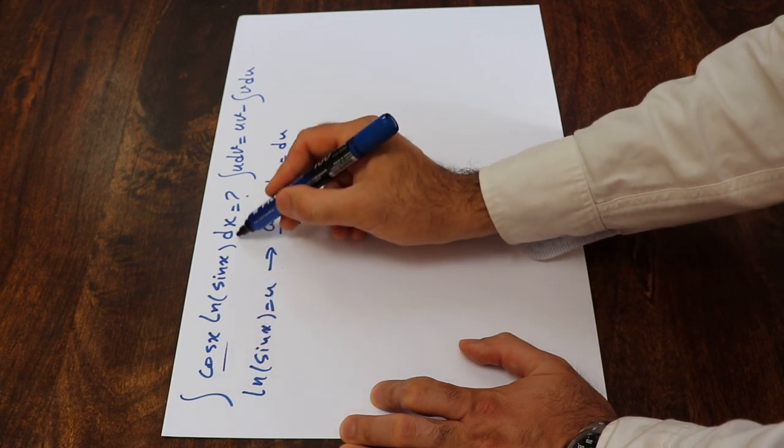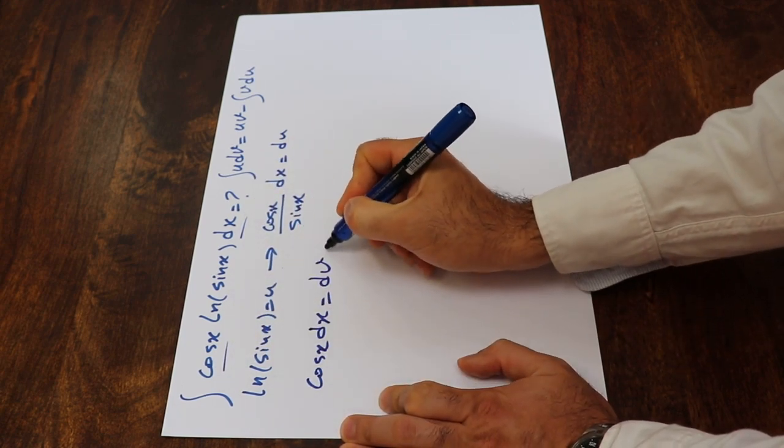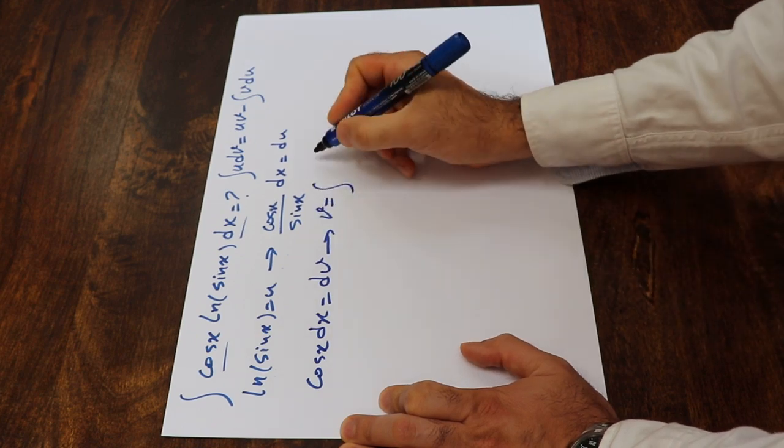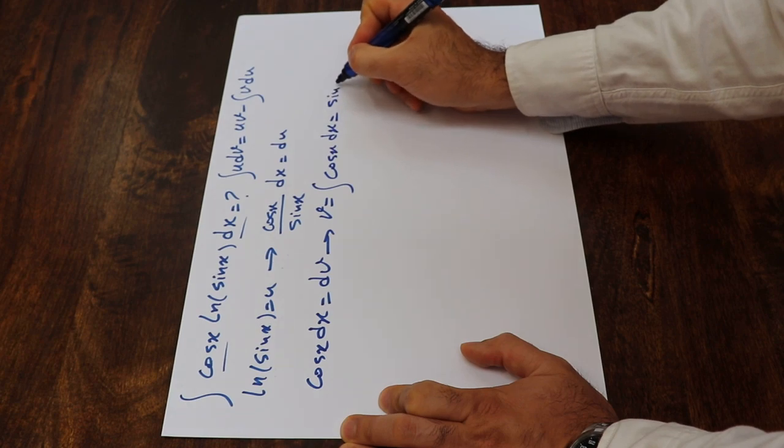So that is u, and then let's define cosine x dx as dv. Therefore, v will be equal to the integral of cosine x dx, which will be equal to sine x.